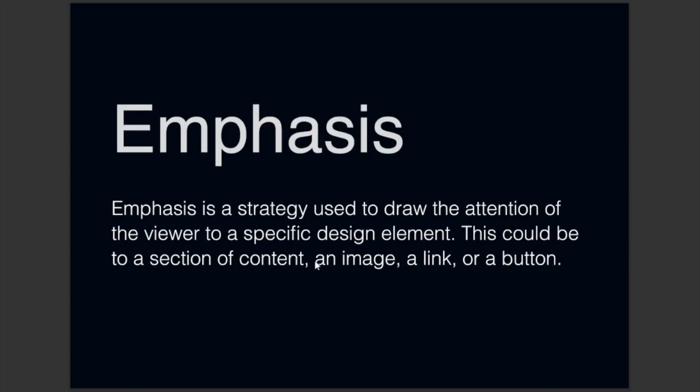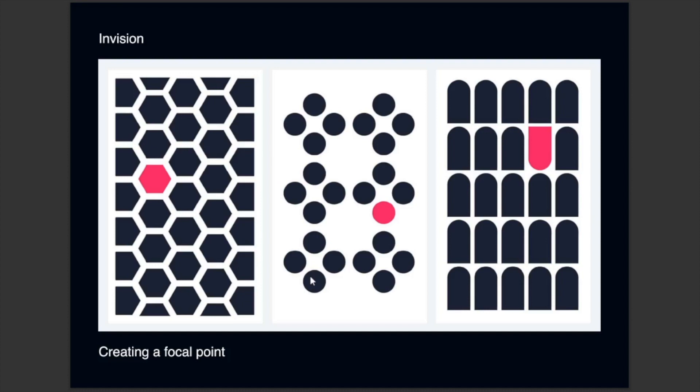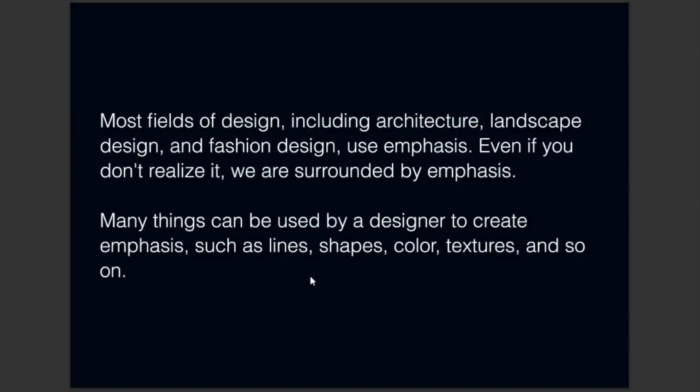Next on our list of design principles is emphasis. Emphasis is a strategy used to draw the attention of the viewer to a specific design element — this could be a section of content, an image, a link, or a button. An example of this is shown in a diagram from InVision. Most fields of design, including architecture, landscape design, and fashion design, use emphasis. We are surrounded by emphasis. Many things can be used by a designer to create emphasis, such as lines, shape, color, texture, and so on.